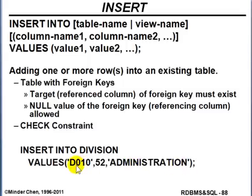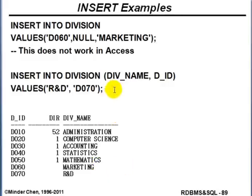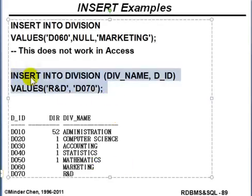You may notice that the value for a string column data type should be enclosed in single quotes. The director's ID is a number, so we don't need to enclose it in single quotes. In this next example, I'm inserting into the division table with division name 'RND' and division ID 'D070'.